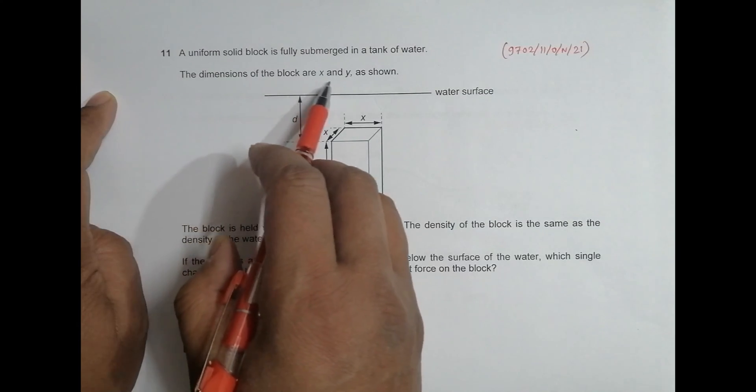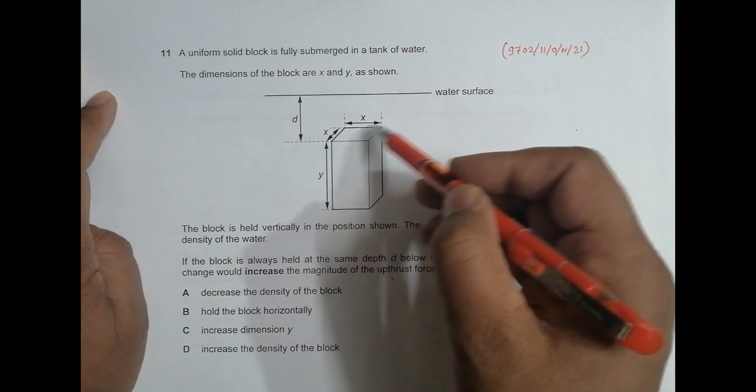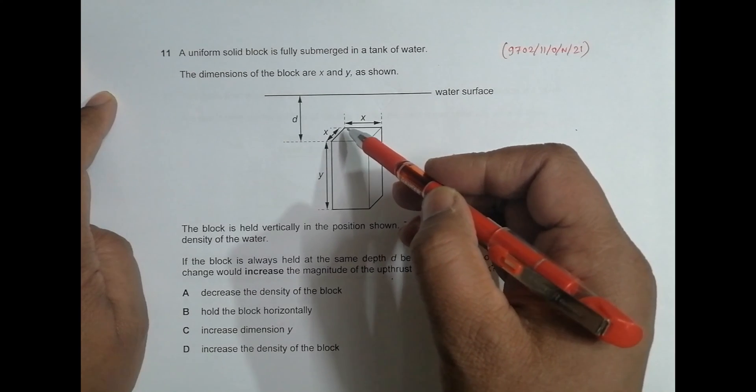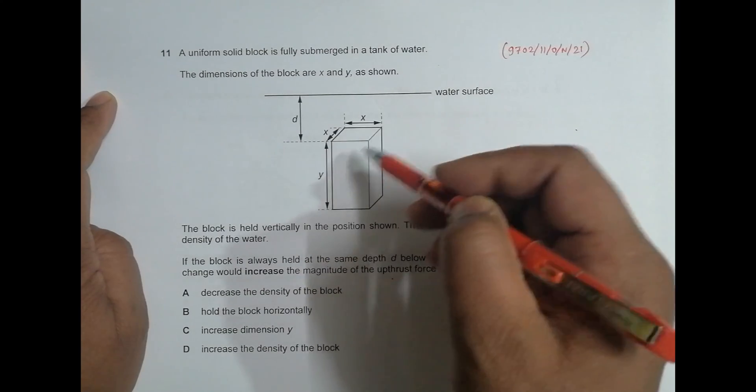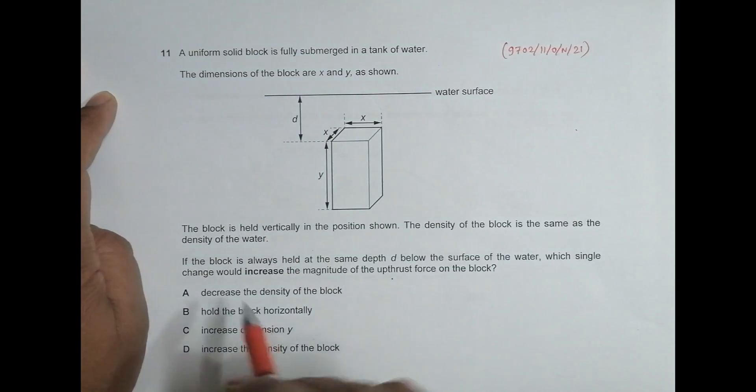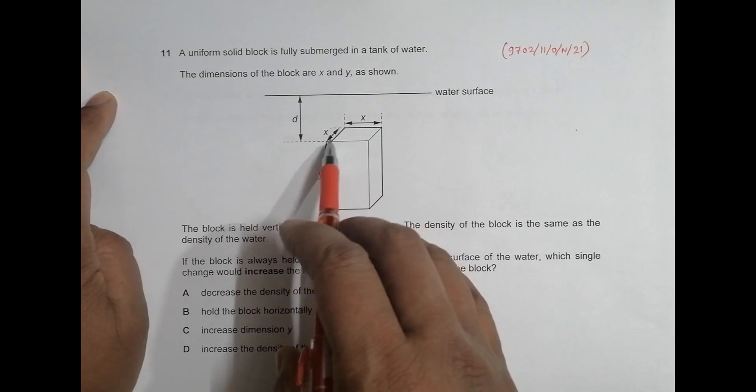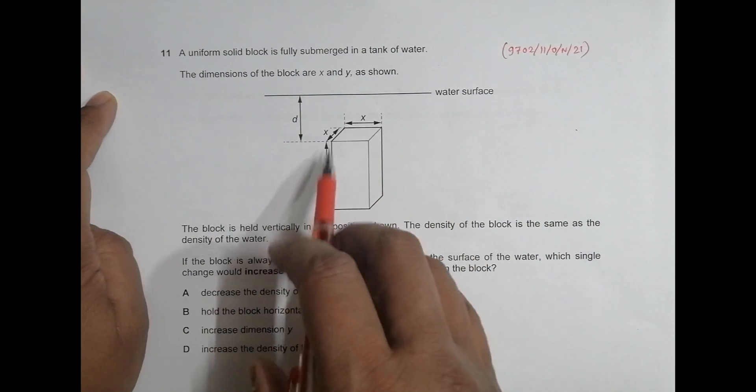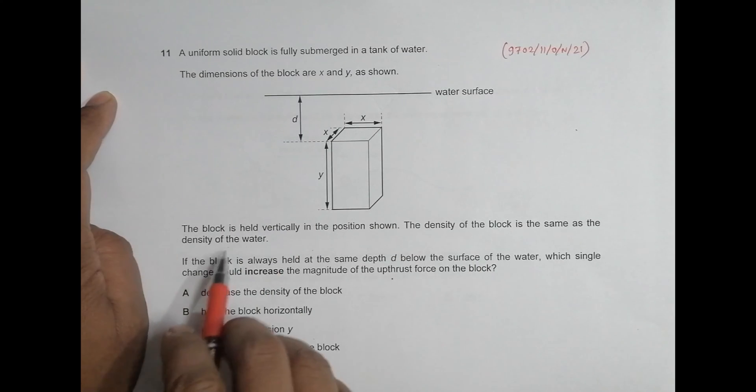The dimensions of the block are X and Y, so X and Y are the upper area dimensions. And so this X is square, this is somewhat a long thing here.